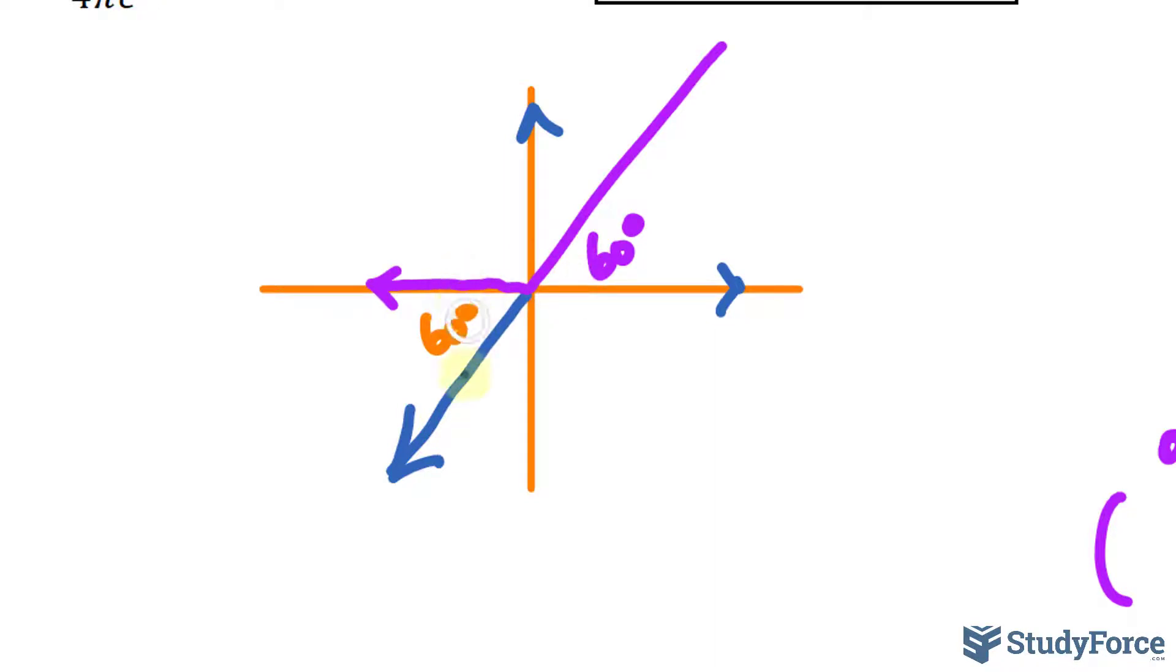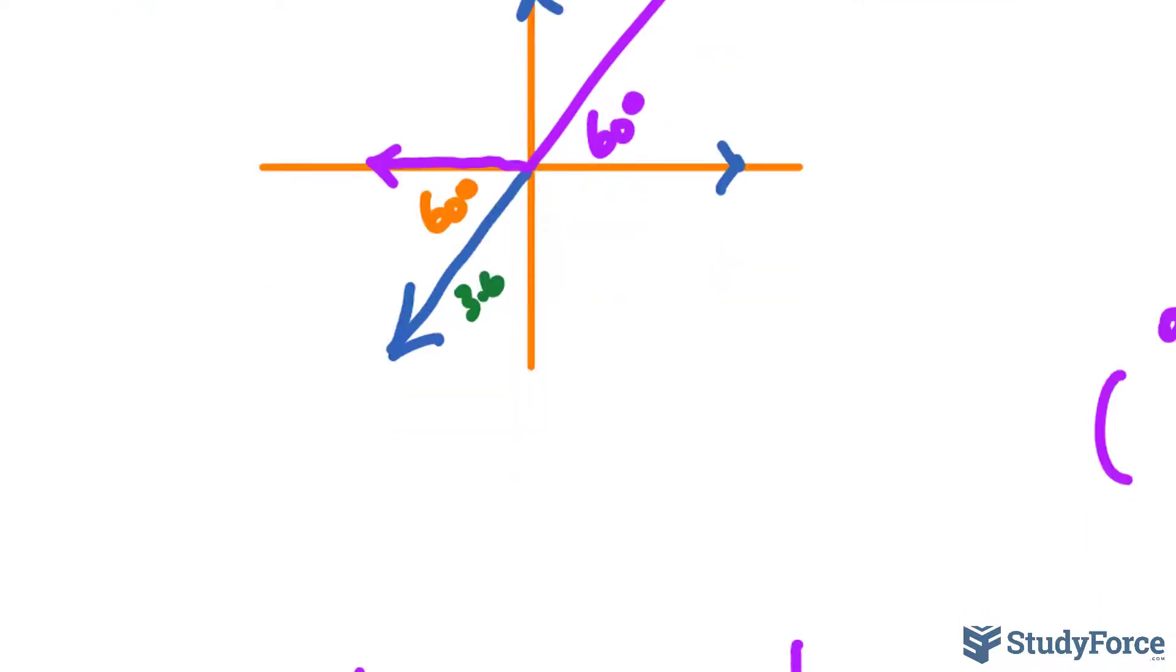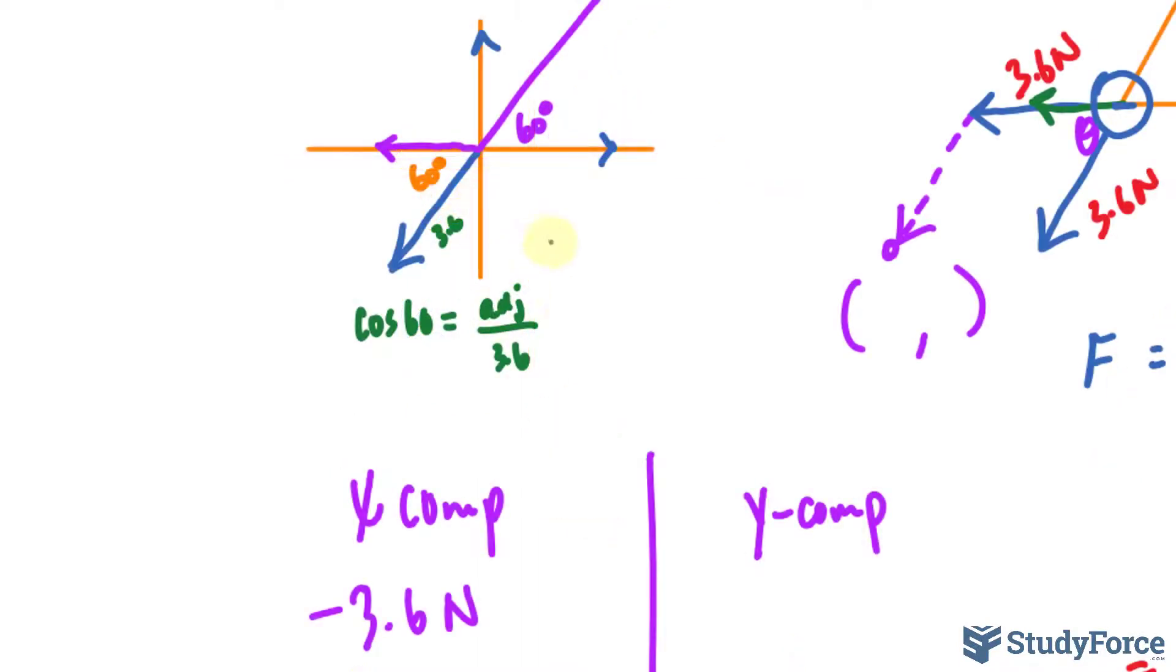So now we have the angle and we also have the hypotenuse being 3.6. We can use cosine. Cosine 60 is equal to the adjacent, which is that purple one, over the hypotenuse of 3.6. If we solve for adjacent, which represents that purple one, we get 3.6 cosine 60 degrees and that's adj.